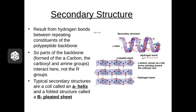Little curly cues begin to form, which we call an alpha helix — and that should be an alpha, not just an A. Or sometimes they form these kind of folded sheets, known as beta pleated sheets — so that should be a beta, not just a B.